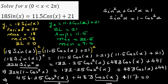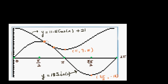Going back to the full graph: the sine graph (18 sin x) is above the cosine graph (11.5 cos x + 21) only within the interval from x = 1.96 to x = 2.32. Outside that interval, the sine graph is always below the cosine graph.